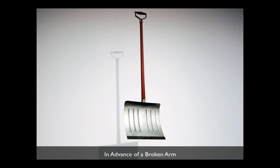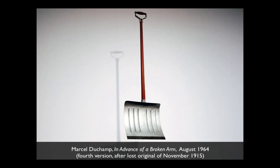There's the even more absurd part — we're looking at a photograph, not the original In Advance of a Broken Arm, but actually a later snow shovel that he replaced the original with after the first had been lost, perhaps to a snowstorm. The label reads: August 1964, fourth version, after lost original of November 1915. So can you even have an original? Well, exactly — there are probably a hundred of those originals.